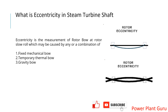Welcome to Power Plant Guru's new video. In this video we will understand an important concept of eccentricity in steam turbine. Eccentricity can happen in any large machine whether it be a steam turbine, a gas turbine, or a compressor. It depends upon the length and weight of the rotor. As steam turbines are very large in size — maybe 500, 600, 800, or 120 megawatt — that is why eccentricity is more prominent in steam turbines.